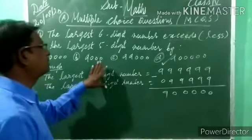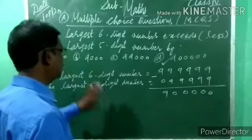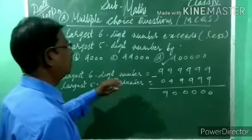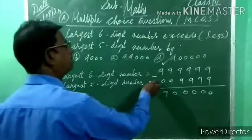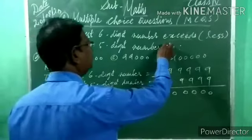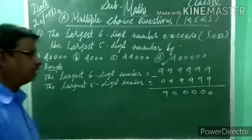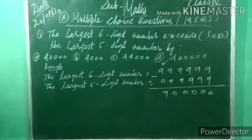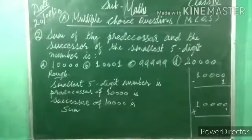To summarise: write the largest six-digit number, write the largest five-digit number, and subtract them — because 'exceed' means minus. Note this down. Now second example.